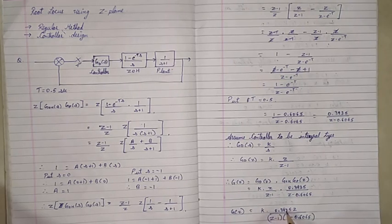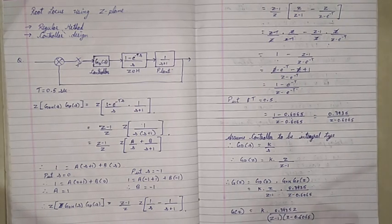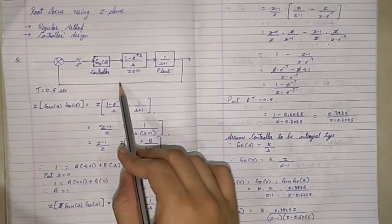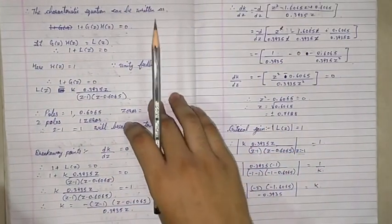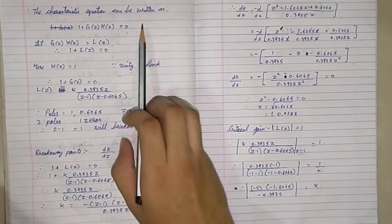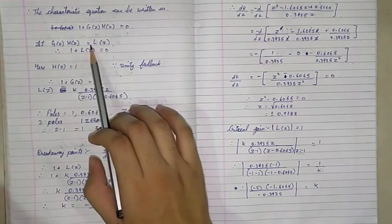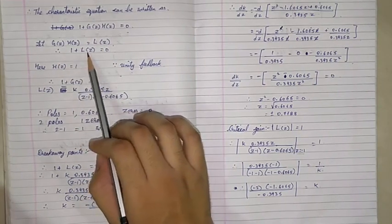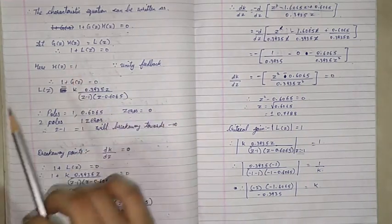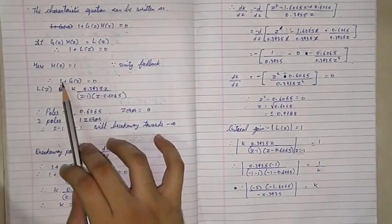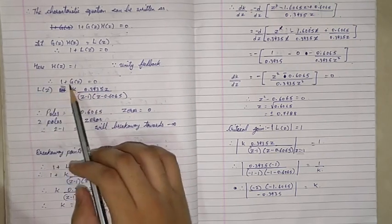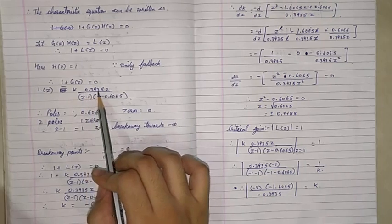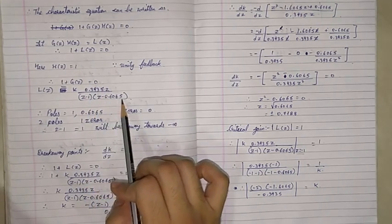G(Z) is equal to K times 0.3935Z, divided by (Z minus 1)(Z minus 0.6065). We know H(Z) equals 1 because of unity feedback. The characteristic equation is 1 plus G(Z)H(Z) equals 0. Letting L(Z) equal G(Z)H(Z), and since H(Z) equals 1, this reduces to 1 plus G(Z) equals 0. So L(Z) equals K times 0.3935Z divided by (Z minus 1)(Z minus 0.6065).